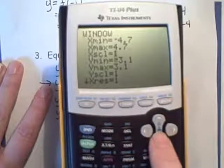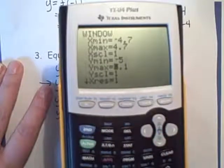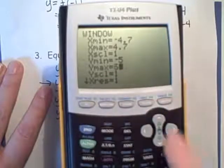I want to see a little bit lower, so I'm going to say maybe negative 5, and a little bit higher, maybe up to 6.